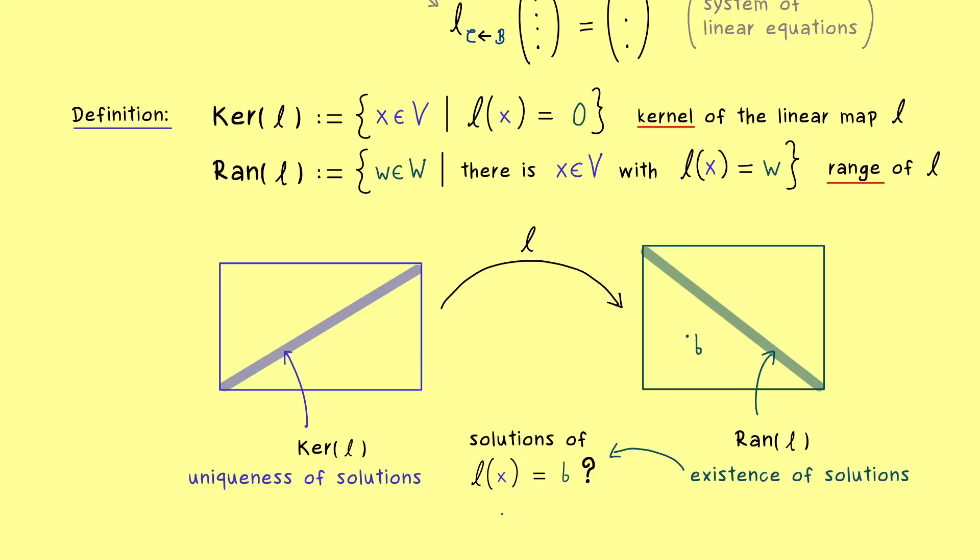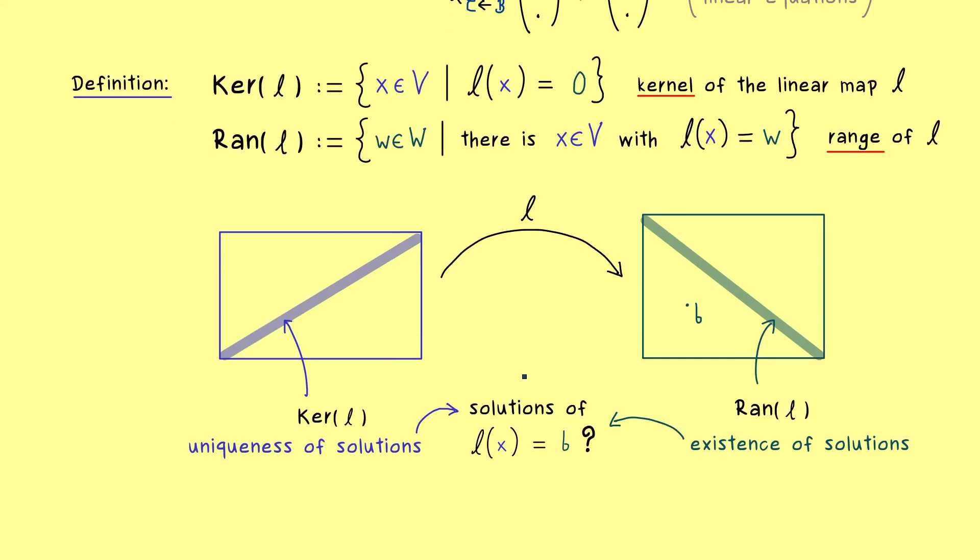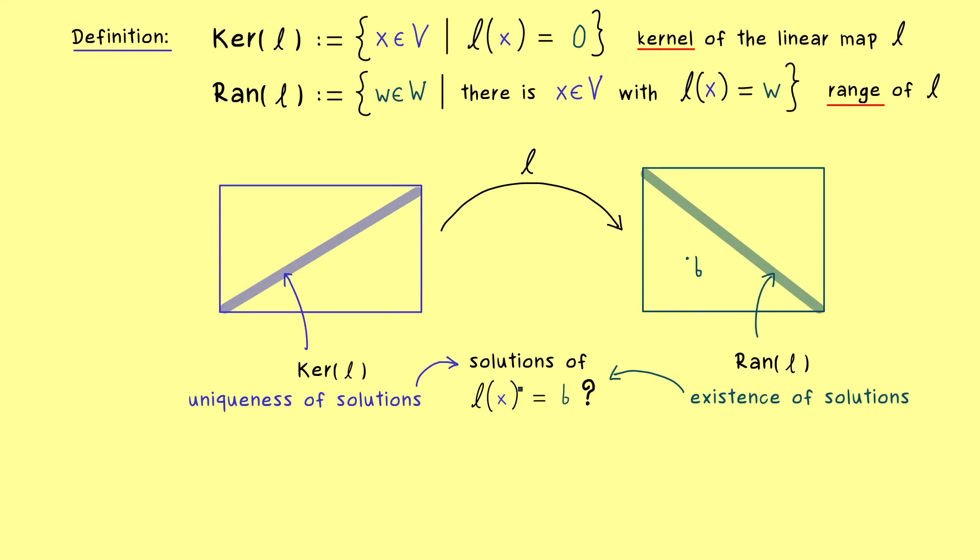On the other hand, uniqueness of such a solution we can only have if the kernel is trivial. More precisely, this means if the kernel contains more than just the zero vector then we cannot have uniqueness of solutions, simply because in this case we can always add such a non-trivial kernel element to the given solution. And not so surprisingly the solution set looks similar to what we have in the matrix case.